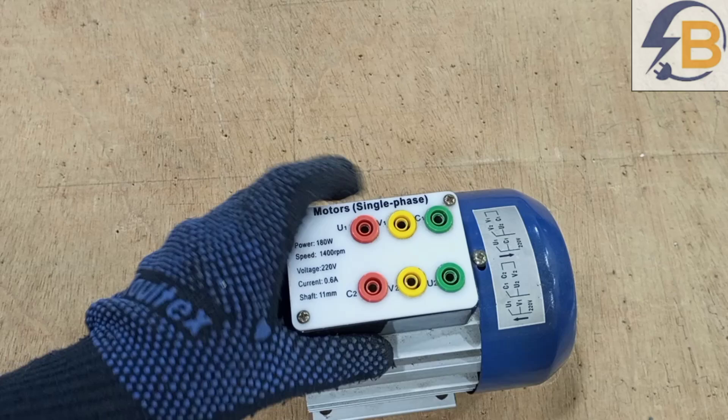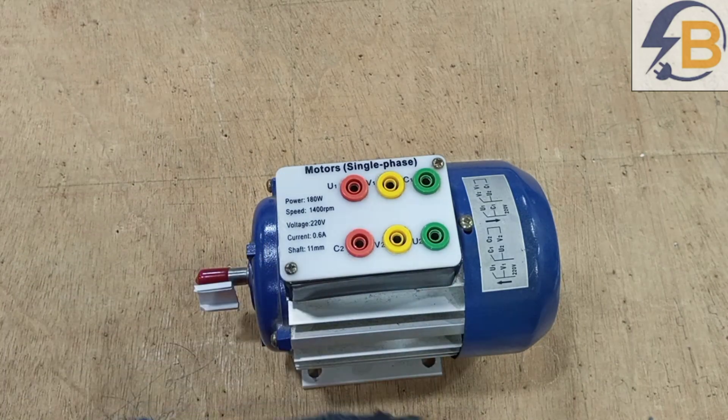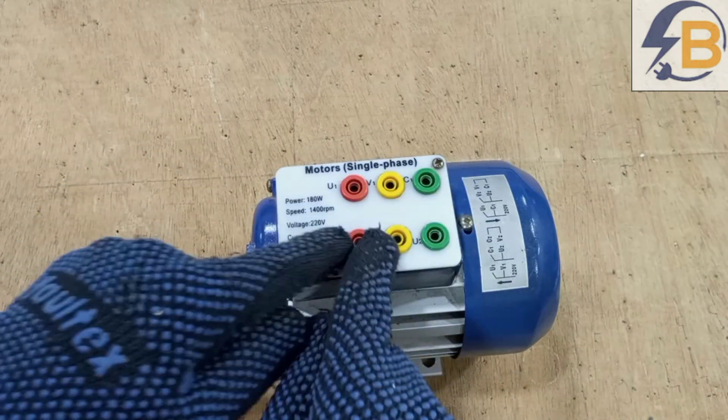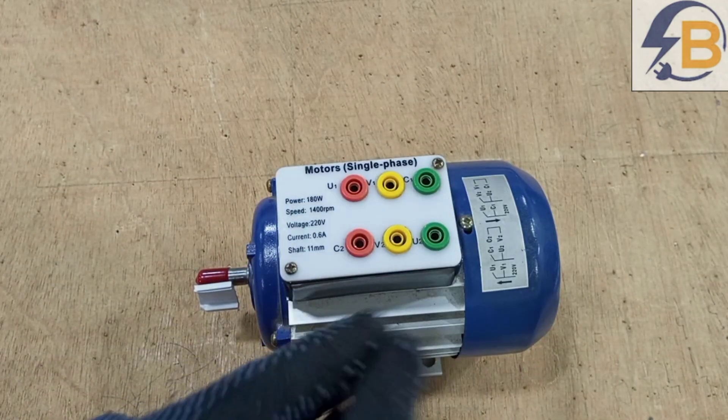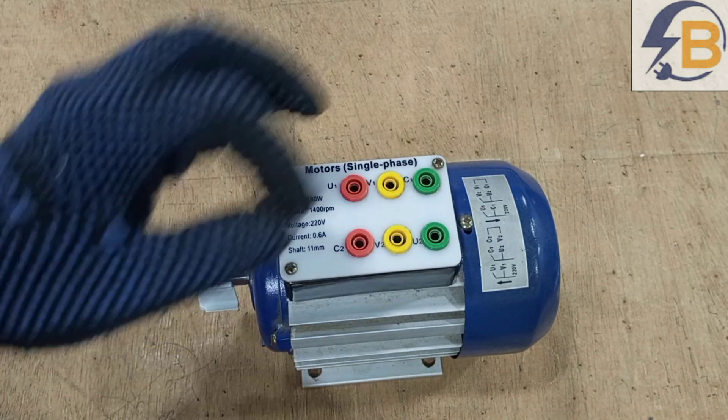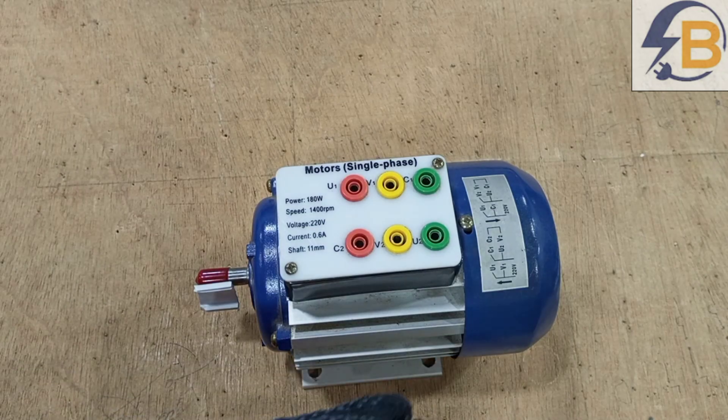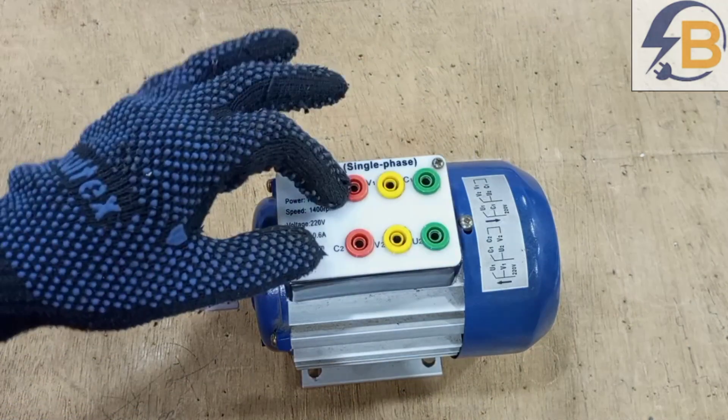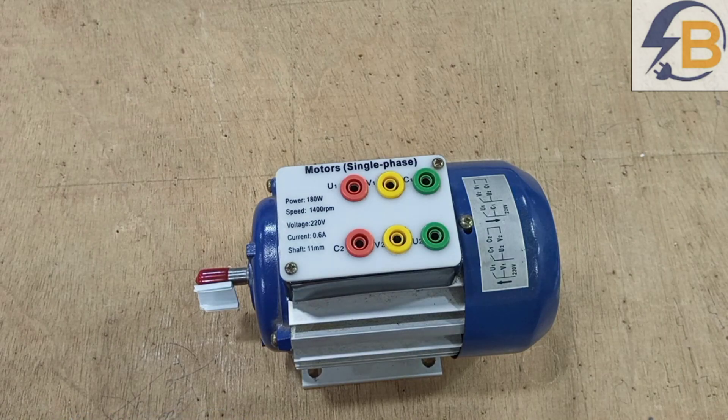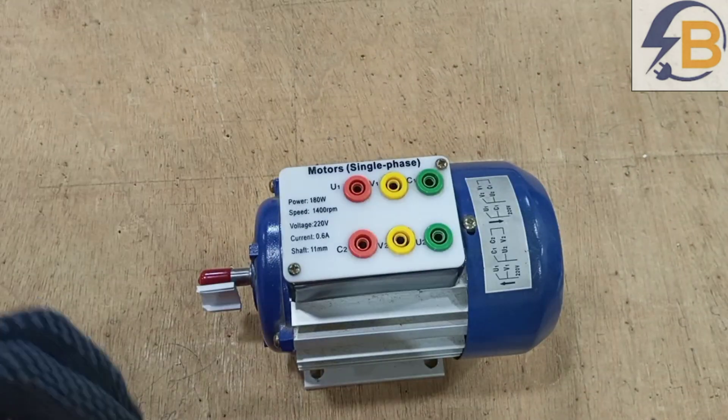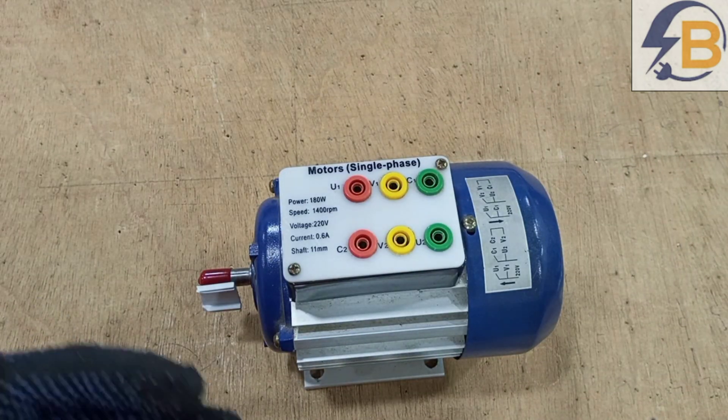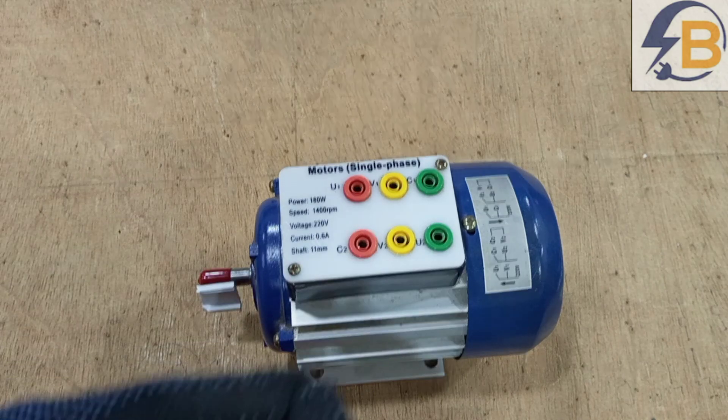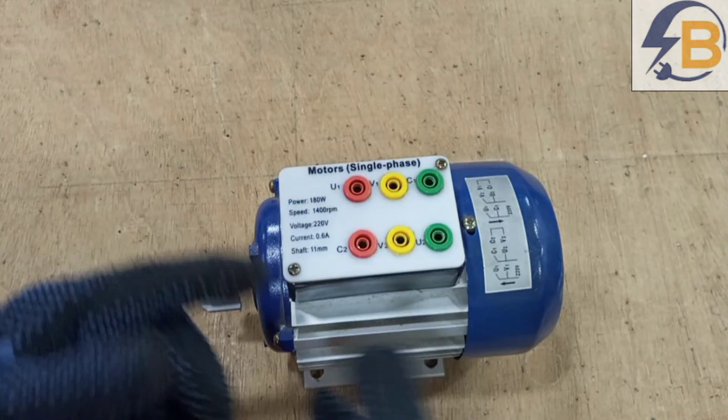So now we have single phase supply that is live and neutral that will power this motor. But how are we going to interconnect the six terminals to make the motor work? Let's look at this. So first of all, there is a simple thing you have to understand to make this connection very easy. I'm going to give an explicit explanation so you can be able to easily connect this to supply by yourself.